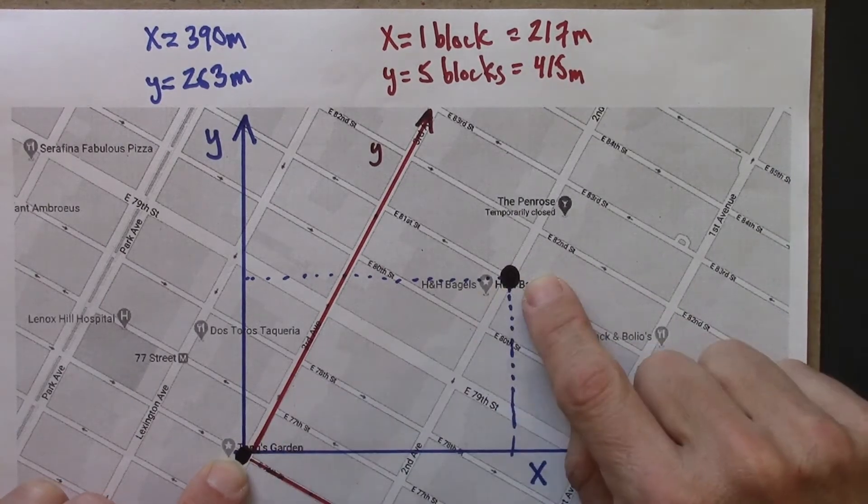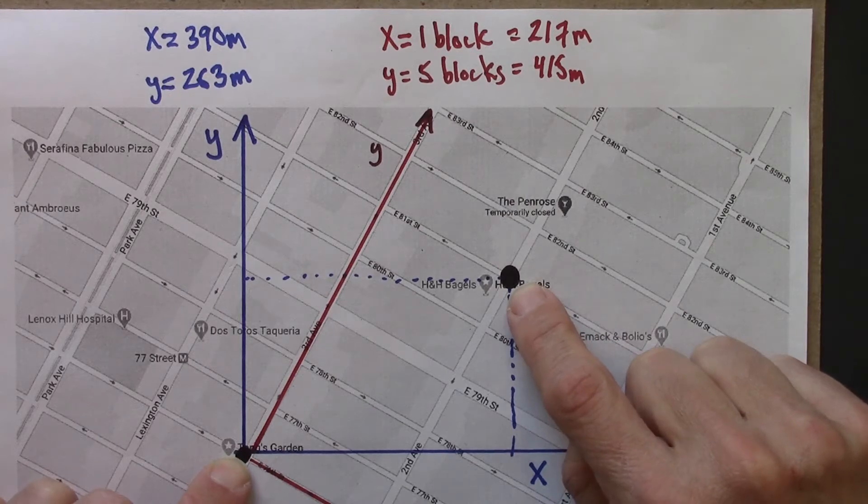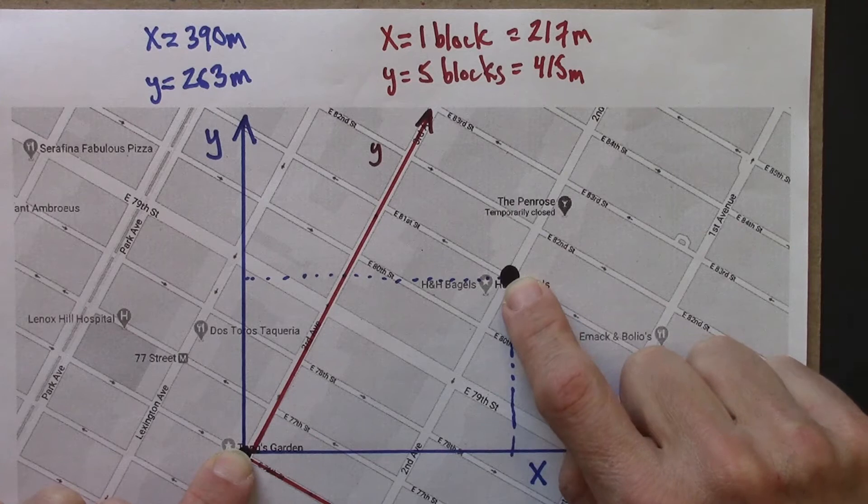The distance from this point to that point, from Tang's Garden to H&H Bagels. That distance is the same no matter how you choose to orient your axes.